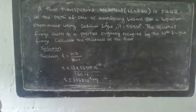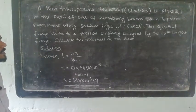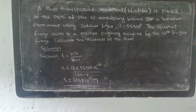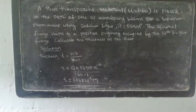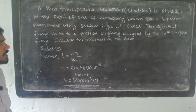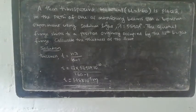Next problem: A thin transparent material with refractive index mu equal to 1.60 is placed in the path of one of the interfering beams in a bi-prism experiment using sodium light, where lambda equals 5890 Angstroms. In the bi-prism experiment we have two coherent beams, and the glass plate with refractive index 1.60 is placed in the path of one coherent beam.